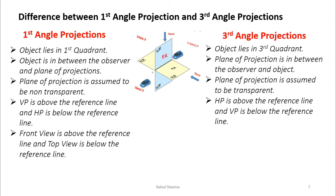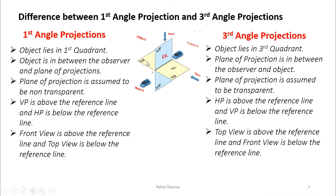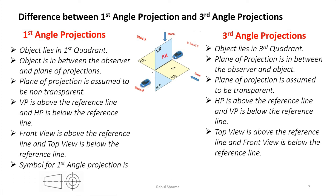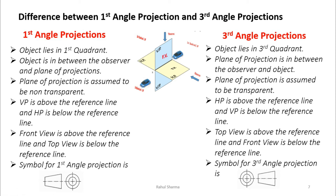In first angle projection, the front view goes on VP above the reference line, and the top view goes on HP below the reference line when rotated. In third angle projection, the top view goes above the XY line and the front view remains below it. The symbol for first angle projection shows the front view and top view of a frustum of a cone in that order, while for third angle projection the top view appears above the front view.